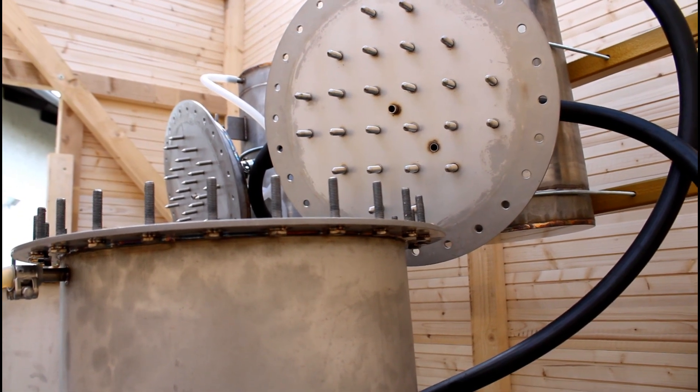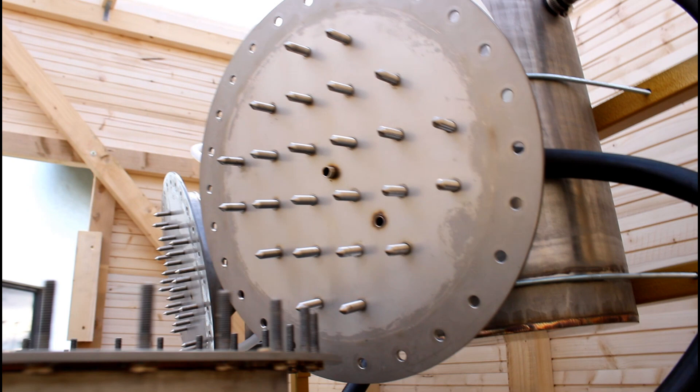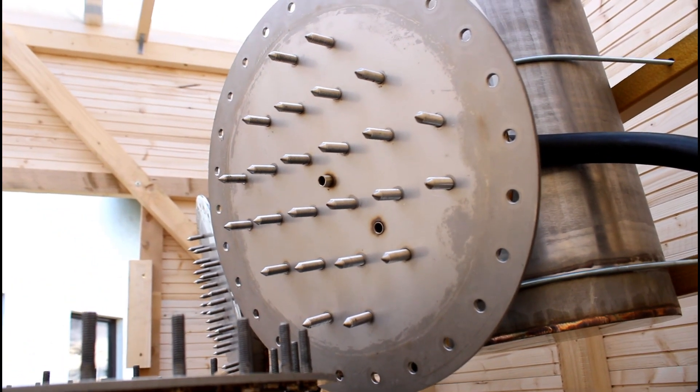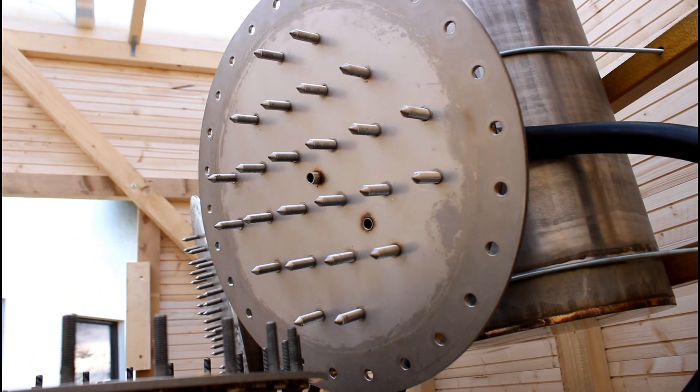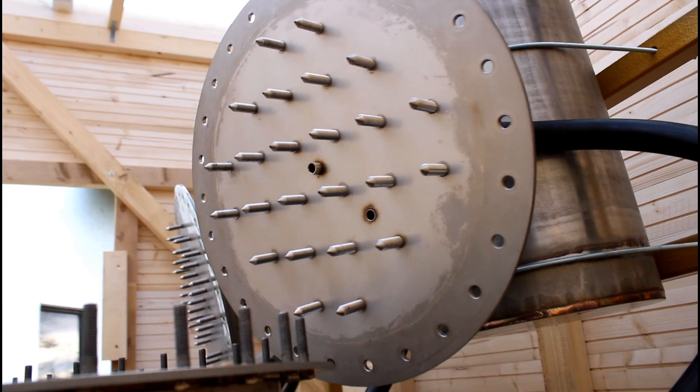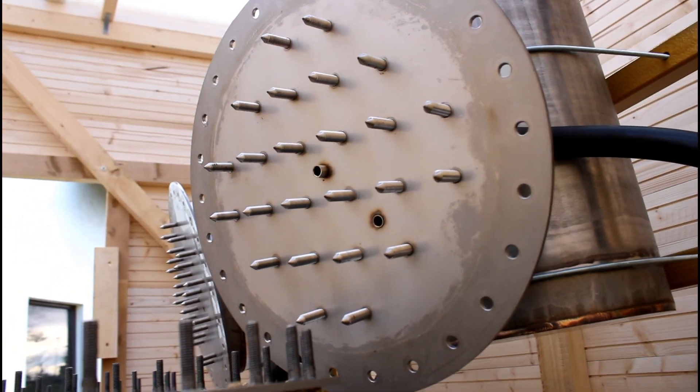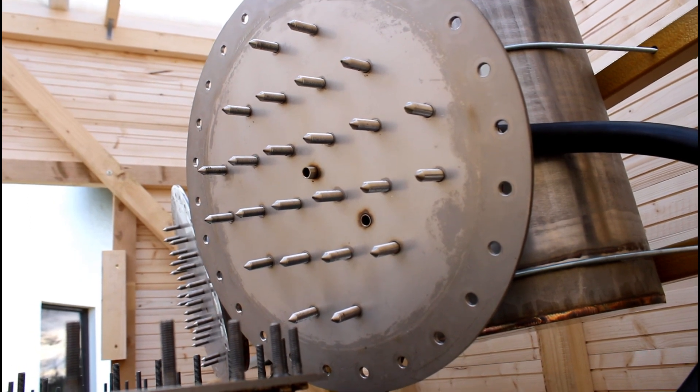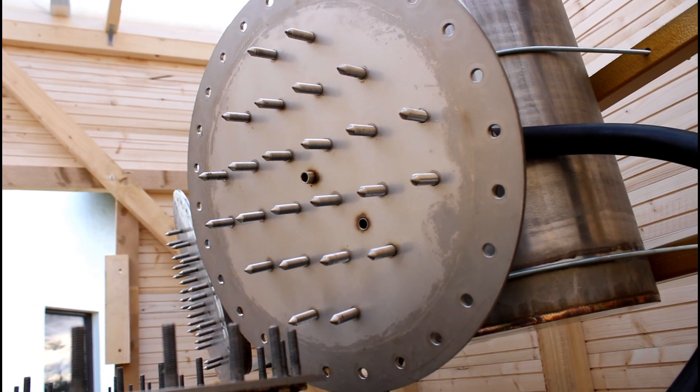But here you can see now the lid. You see that there are many spikes on the lid. And this is the case because there the vapor will condense and drop onto the herb.